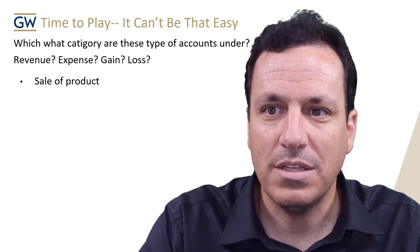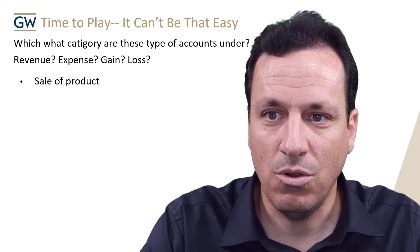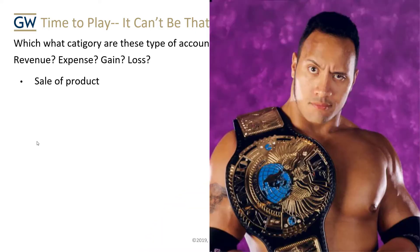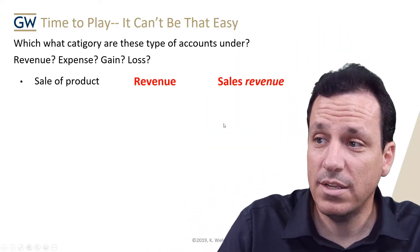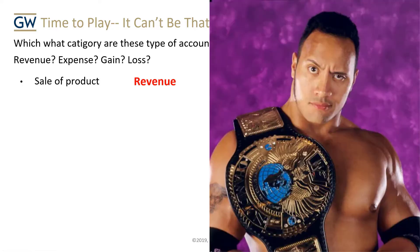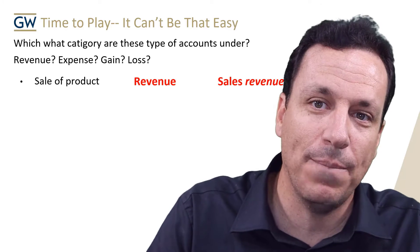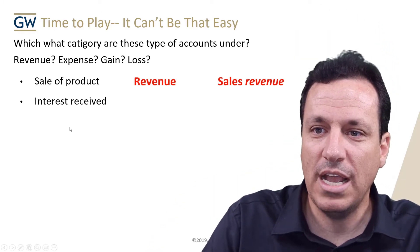Sale of a product. What is it — revenue, expense, gain, or loss? Sale of a product — that's easy. That's going to be revenue. Very good. Revenue. Assets aren't involved — I don't know how many times I need to tell you this. Let's go to the next account.